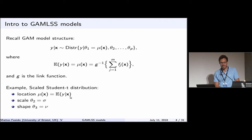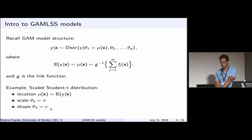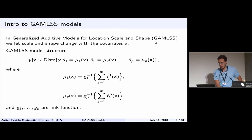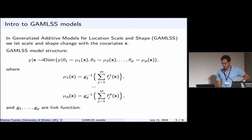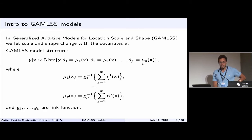An example of this is the scaled Student-t GAM model, where we model the conditional mean and have a scale parameter and a shape parameter — the degrees of freedom of the t-distribution. Now we move to the Generalized Additive Model for Location, Shape and Scale — GAMLSS — where we model not only the mean but also the scale (variance) and other shape parameters. Each parameter can depend on covariates X, giving us essentially p additive models, one for each parameter, each with its own link function.